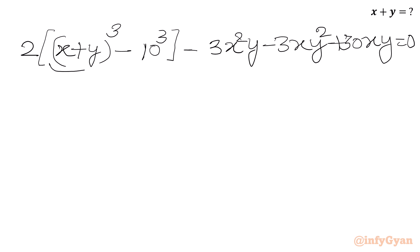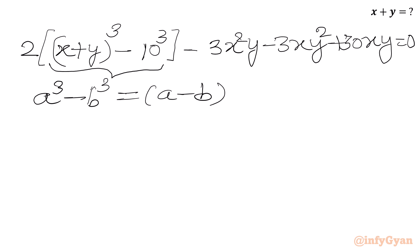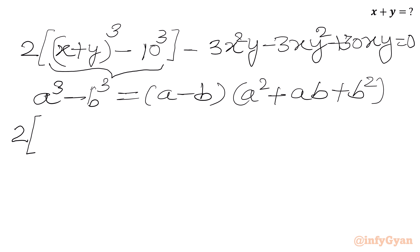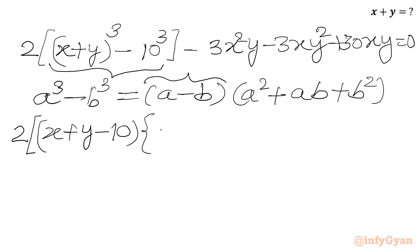Now I can use the a³ minus b³ identity here. The formula is a³ − b³ = (a − b)(a² + ab + b²). Let us apply this. So 2(x + y)³ − 2×10³ becomes 2 times (x + y − 10) times ((x + y)² + 10(x + y) + 100).